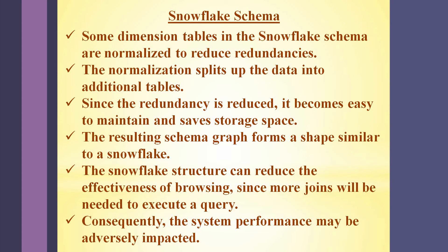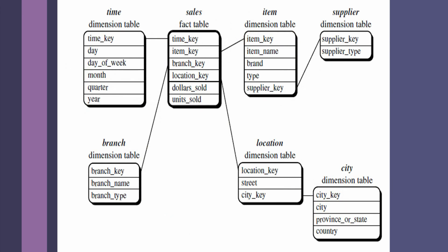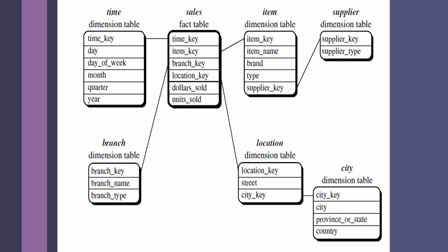The snowflake schema graph resembles the shape of a snowflake. In the example on screen, there is a single fact table at the center sharing many dimension tables. You can observe that the dimension table item is being normalized — that is, it is split into a dimension table supplier, which gives further information regarding the dimension supplier. Similarly, the dimension table location is split into an additional dimension table, city, which gives further information about the dimension city.